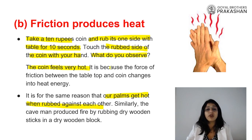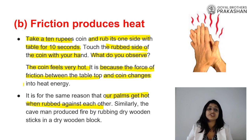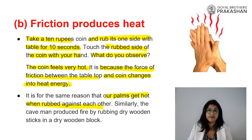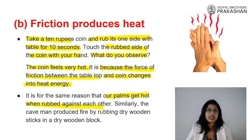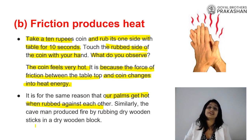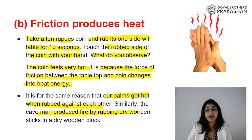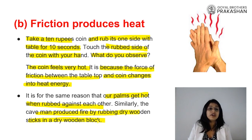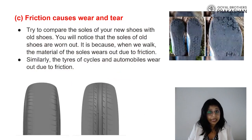The coin feels very hot because the force of friction between the tabletop and the coin converts energy into heat energy. For the same reason our palms get warm when we rub them together. Similarly, cavemen discovered fire by rubbing dry wooden sticks on a dry wooden block — so friction can generate heat.